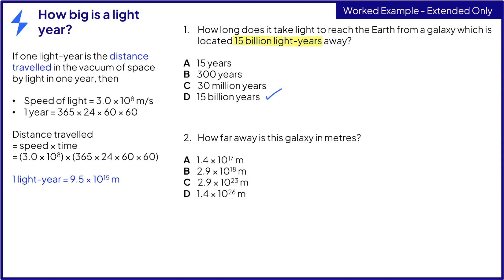So how far away is this galaxy in meters? 15 billion is a 15 with 9 zeros after it, 15 times 10 to the 9 light years. Now all we have to do is multiply the distance in light years with the distance in meters, which is 15 times 10 to the 9 times 9.5 times 10 to the 15. This gives us an answer of 1.4 times 10 to the 26, which is option D as well.